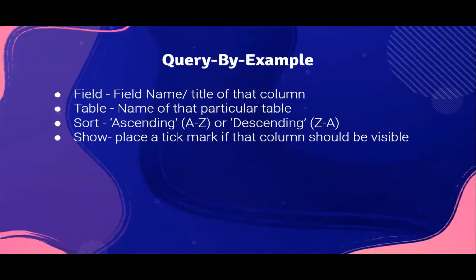Next is query by example. In this, they'll give you a query and a table, and you have to fill in data so that it shows the particular things asked in the question. The first row asks for the field — you have to write the field name or the title of that column, like price, size, or color. The next row is for the table — write the name of the particular table that is already given in the question, so just look at the question and write whatever you see.